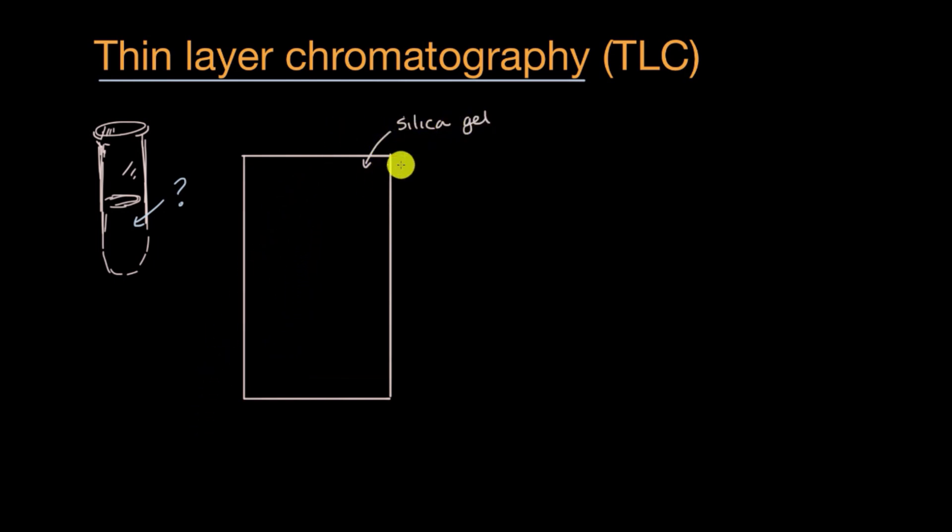Now, the silica gel, as I mentioned, this thing is very polar. What you're going to do is take some of our mystery substance, let's say it's this color right over here, and we're going to place a dot of it on that silica gel. You then want to take this plate that has the silica gel on it and that little dot of our mystery substance.